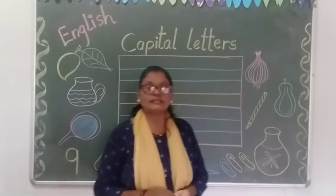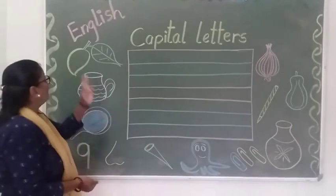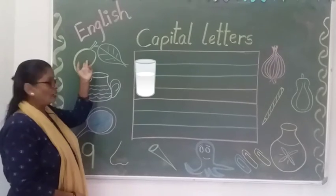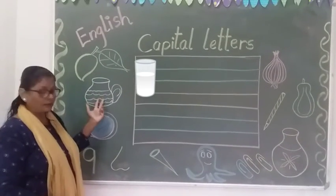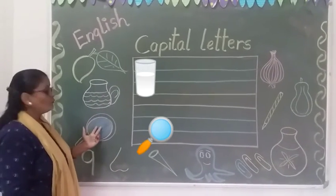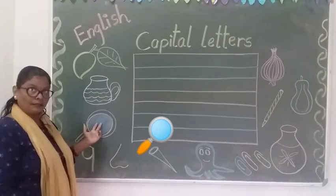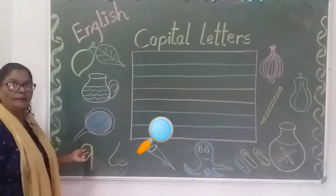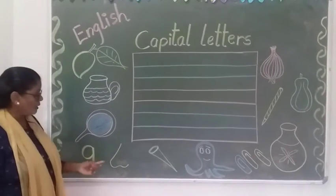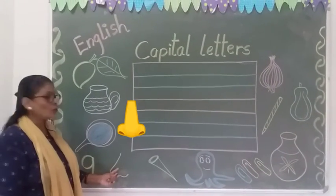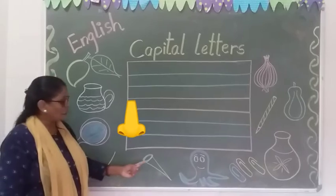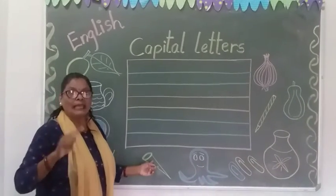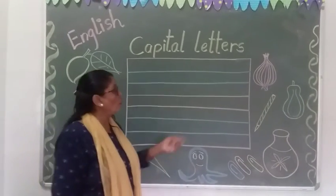First of all, see the vocabulary words. M for mango, M for milk, M for mirror. Now the next letter is N — N for number 9, N for nose, N for leg.